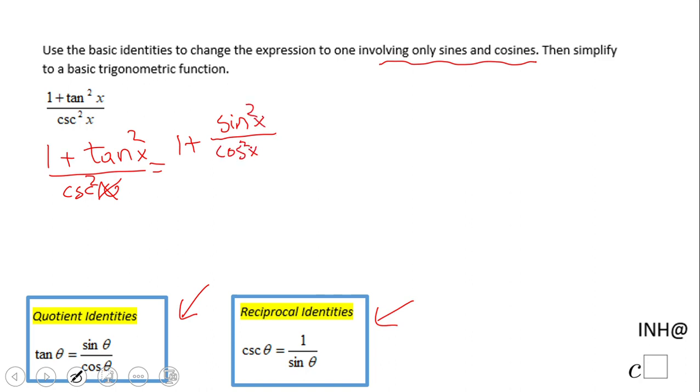Since tangent squared becomes sin²x/cos²x and cosecant squared becomes 1/sin²x, we can rewrite the expression. We can change that 1 to cos²x/cos²x so we can add the two parts with a common denominator in the numerator.